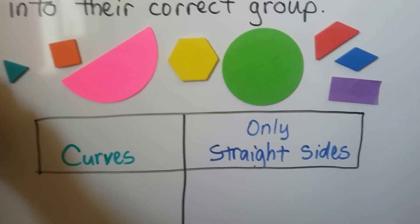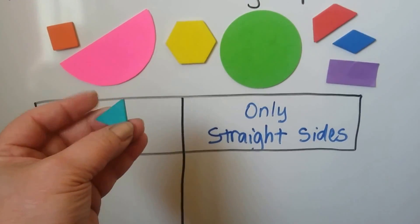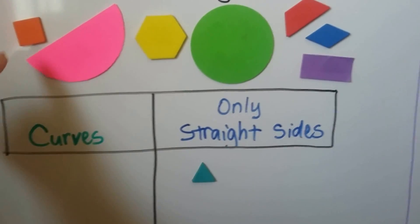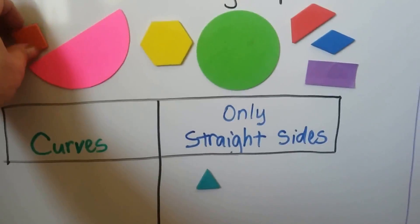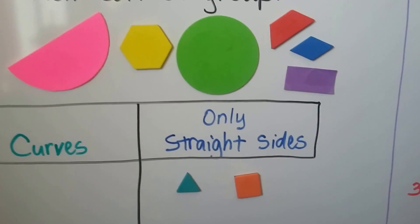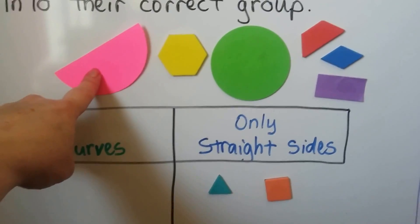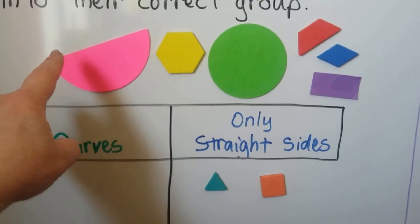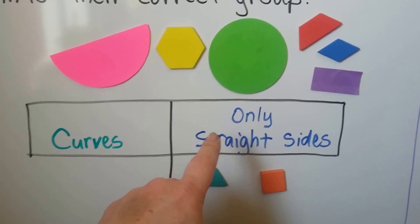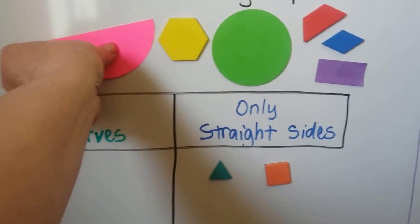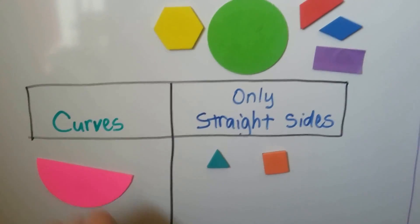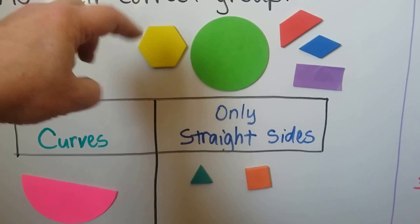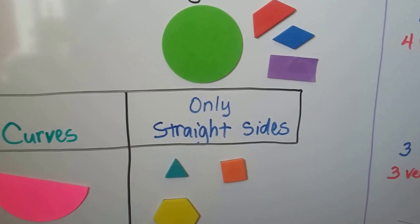Let's start with the triangle here. It doesn't have any curves. It only has straight lines, so it's going to go here. The square only has straight sides, so it's also going to go here with the triangle. This is a semicircle. It has a curve, doesn't it? It does have a straight line, but it doesn't go with only straight sides, because it has a side that curves. So a semicircle is going to go here. Here we have a hexagon. It only has straight sides, so it's going to go with the triangle and the square.